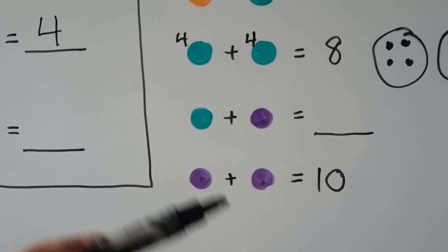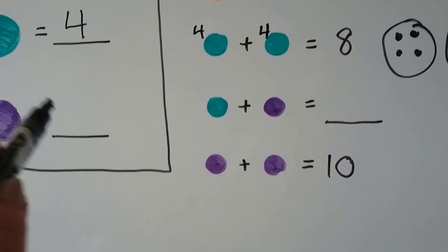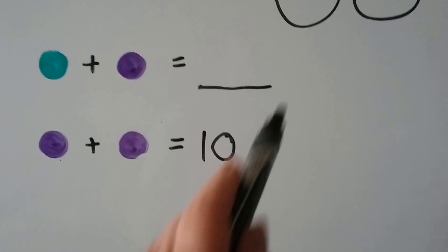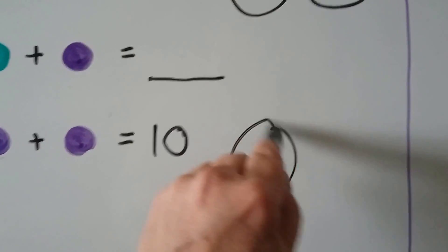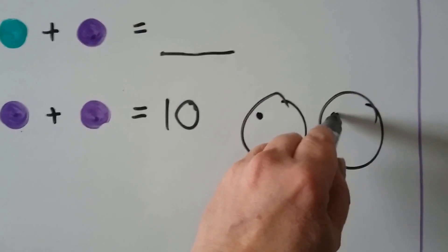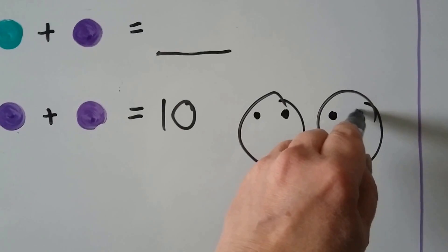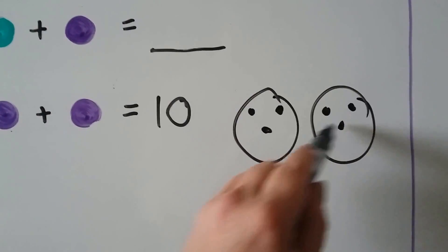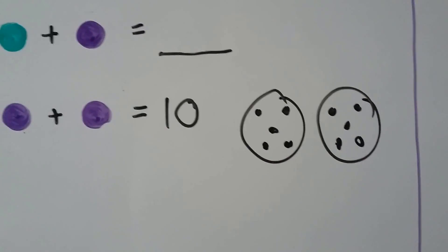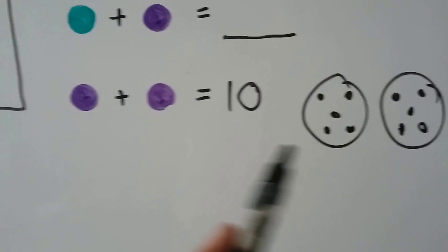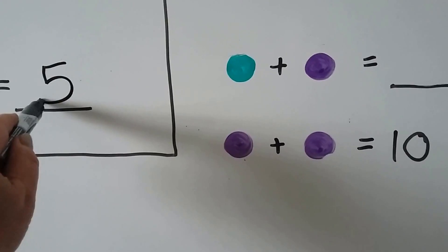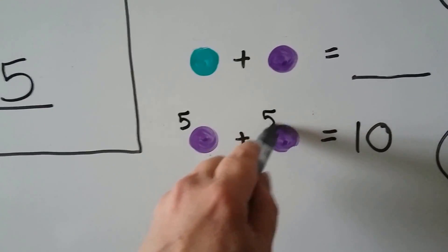We need the purple value next. What doubles fact equals 10? We can make two groups and count back and forth with counters: 1, 2, 3, 4, 5, 6, 7, 8, 9, 10. So we have 5 in each group — each purple circle must be equal to 5. 5 plus 5 equals 10.